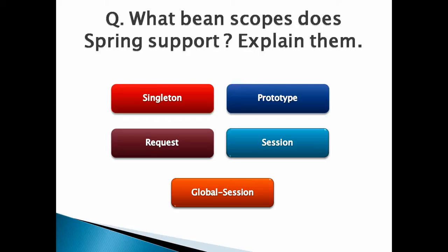Number 3, Request Bean Scope. This type of bean scope is valid only in the context of a web-aware Spring application context. A Spring bean defined in the scope of request gets instantiated for every HTTP request made. This Spring bean lives till the HTTP request lives. Each and every consecutive HTTP request has a newly instantiated bean associated with it.